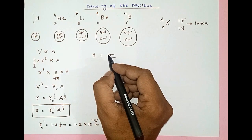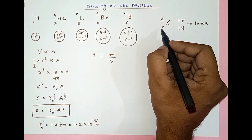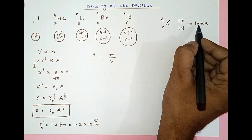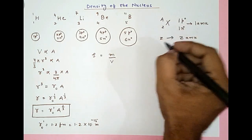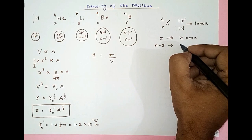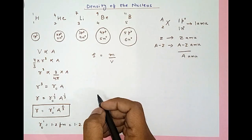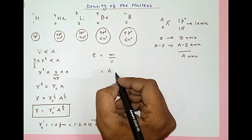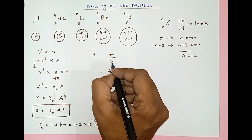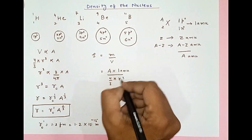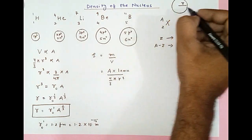The mass of the nucleus equals the total mass of all the nucleons. There are Z protons, each with mass 1 amu, giving Z amu, and (A − Z) neutrons, each with mass 1 amu, giving (A − Z) amu. Adding these up, the total mass of the nucleus is A amu. The volume of the nucleus, treated as a sphere with radius r and Z protons and (A − Z) neutrons, is (4/3)πr³.